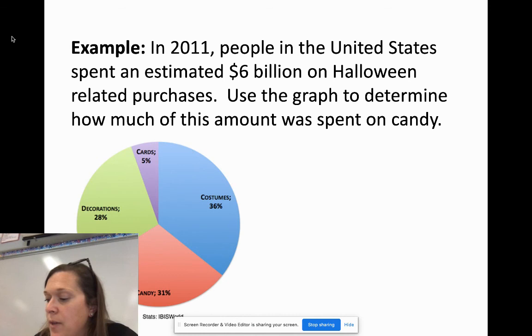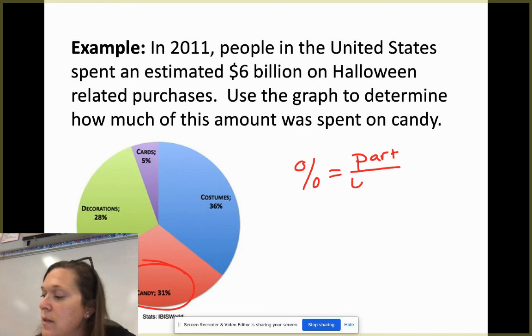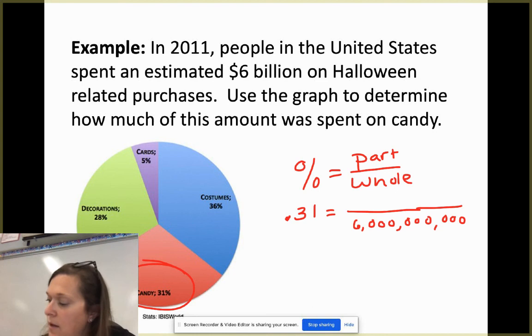Very good. And the last thing that we're going to go through here is a little pie chart. Again, feel free to pause this. Going to jot it down. In 2011, people in the United States spent an estimated $6 billion on Halloween-related purchases. Use the graph to determine how much of this money was spent on candy. So if you look down here, candy, it says we're at 31%. So I need to figure out what 31% of $6 billion is. So remember, percent is equal to part over whole. We're given a percent of 31. I'm going to make that 0.31 as a decimal. I'm finding the part because the total estimate is $6 billion. Make sure you have enough zeros for that. $6 billion, yep. All over X.